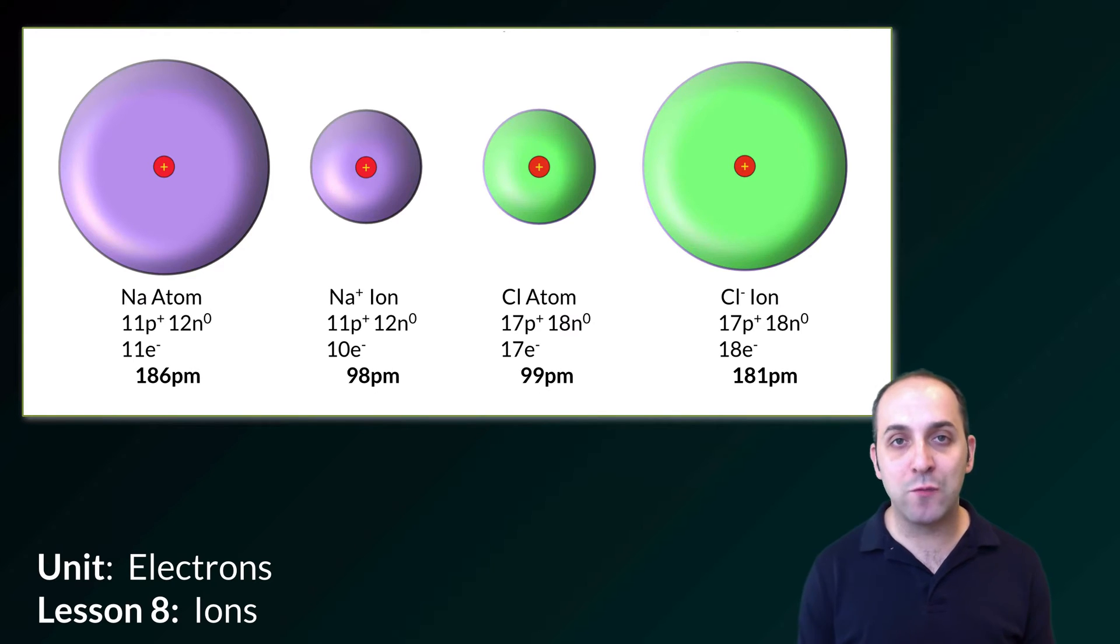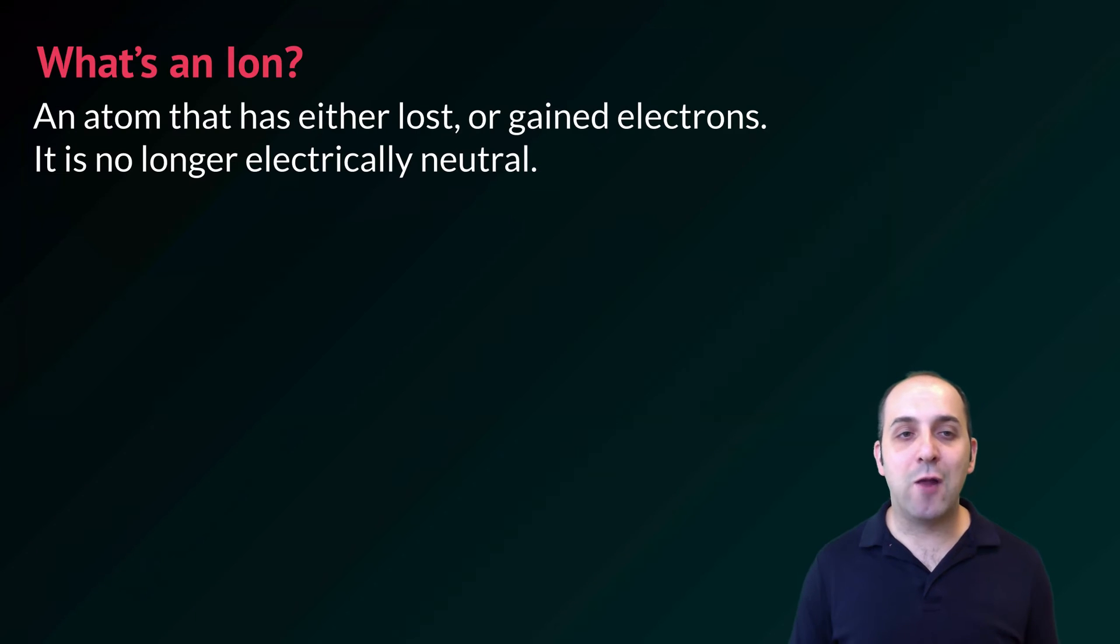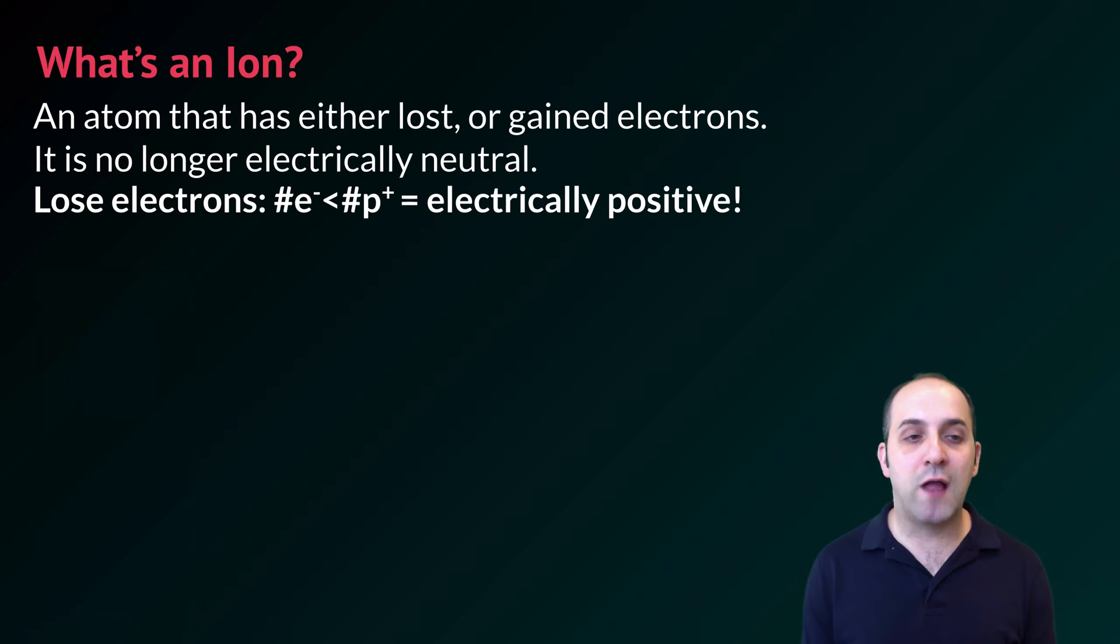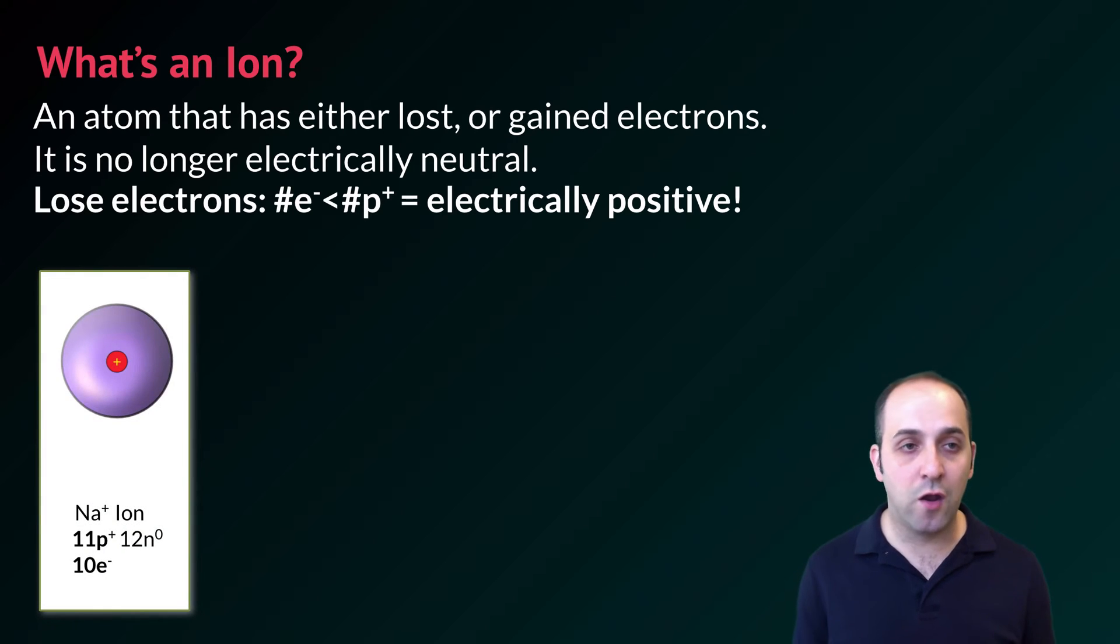Let's go in and talk about what happens when an atom becomes an ion and why it involves electrons. An ion is an atom that has either lost or gained electrons. It is no longer electrically neutral as a result. If the atom loses electrons, it now has fewer electrons than protons, and so as a result it's electrically positive. We see that with our sodium ion. Our sodium ion has 11 protons and 10 electrons, and so now as a result its charge is going to be plus 1.